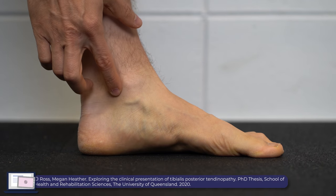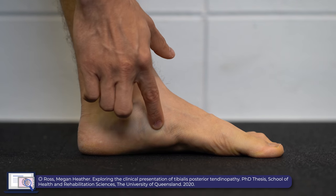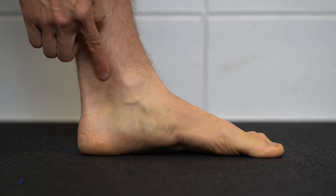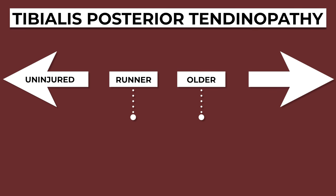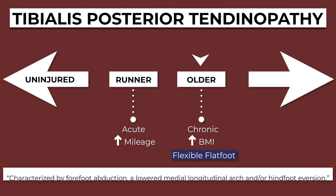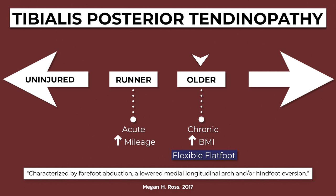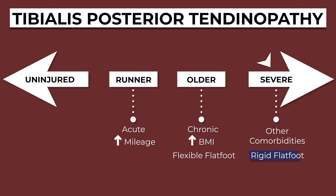In addition to pain along the medial aspect of their foot and/or ankle, individuals diagnosed with tibialis posterior tendinopathy may present with a more pronated foot posture. This too may occur along a continuum. Someone like the older, sedentary individual with the higher body mass may present with a flexible flat foot deformity, characterized by forefoot abduction, a lowered medial longitudinal arch, and/or hindfoot eversion. A rigid flat foot deformity would represent a more fixed posture and would coincide with a significant progression of the condition. Just because you have flat or flatter feet doesn't necessarily mean you're going to develop tibialis posterior tendinopathy.